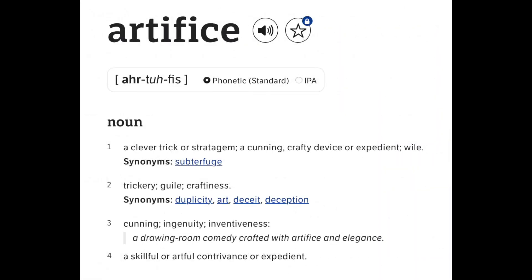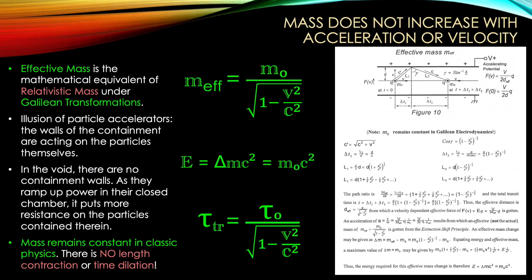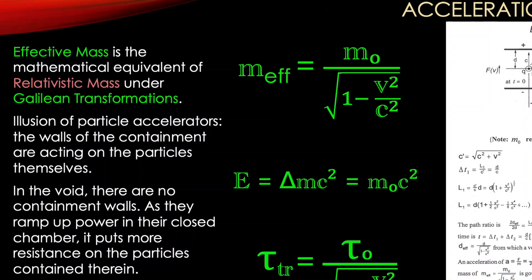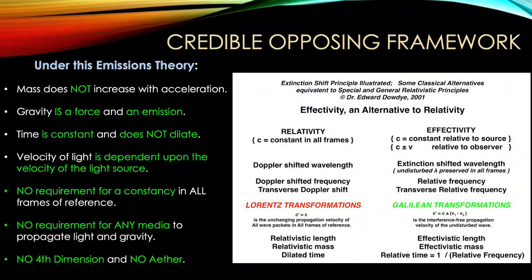Einstein invented relativity as a mathematical artifice to be able to solve the perihelion of Mercury. But he did so by inventing variables that don't exist, like relativistic mass, the fourth dimension, and other constructs which are capable of yielding the correct predictions and solutions.